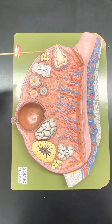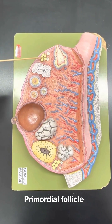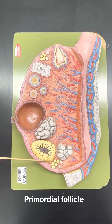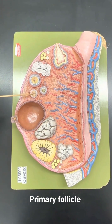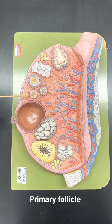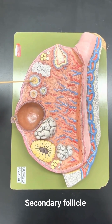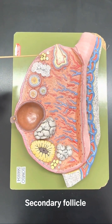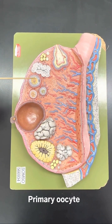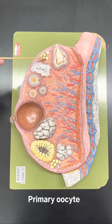Next here we have the primordial follicle. We also notice the primordial follicle over here. Next we have a primary follicle, and then we have a secondary follicle. The primordial follicle, the primary follicle, and the secondary follicle will all have a primary oocyte.